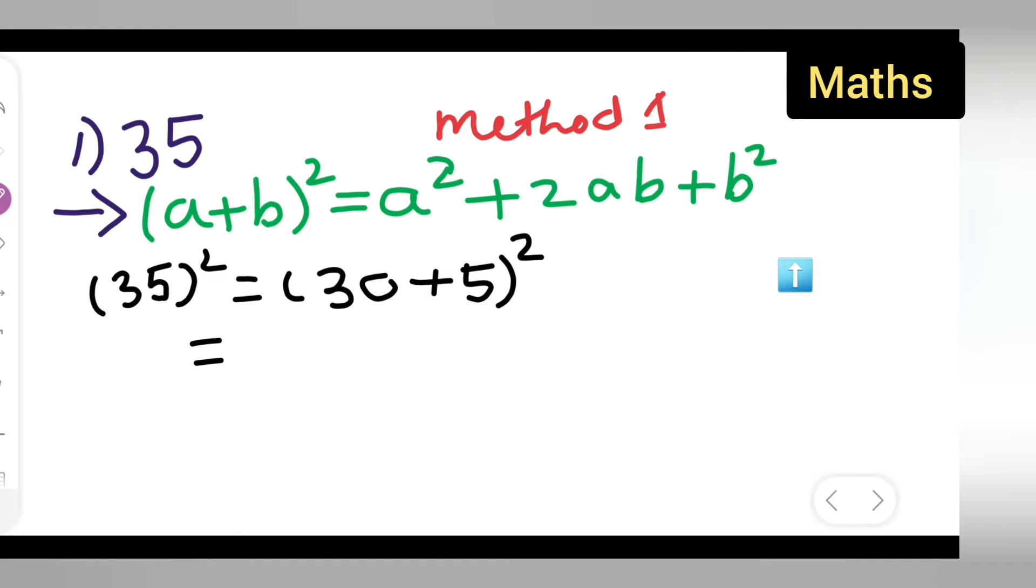The next step is to write 30² + 2×30×5 + 5². What I have done is used this formula (a+b)². I've split 35 into 30 plus 5, then used the formula: a² is 30², plus twice a×b is 30×5, plus b² is 5².